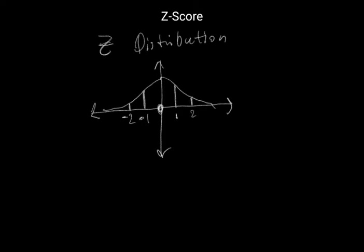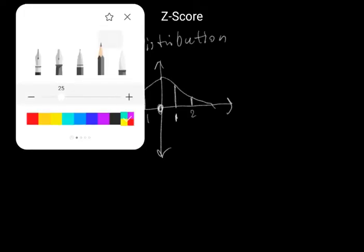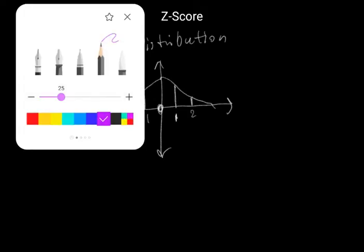And so if a data point lies directly in the center, lies directly here, this means that 50% of the points have a value less than the value in the middle, which is 0.